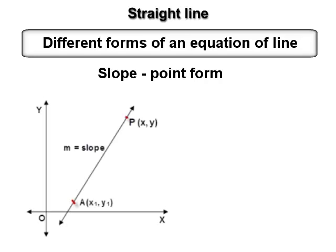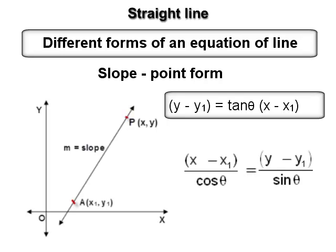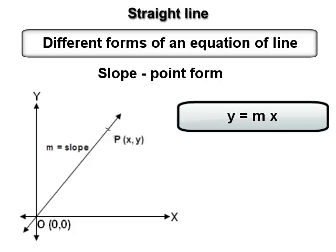Form 1 — Slope-point form: the equation of the line having slope m and passing through the point (x₁, y₁) is y − y₁ = m(x − x₁), that is y − y₁ = tan θ · (x − x₁). Rearranging gives (x − x₁)/cos θ = (y − y₁)/sin θ. If the line passes through the origin, (x₁, y₁) = (0, 0), so the equation becomes y = mx.